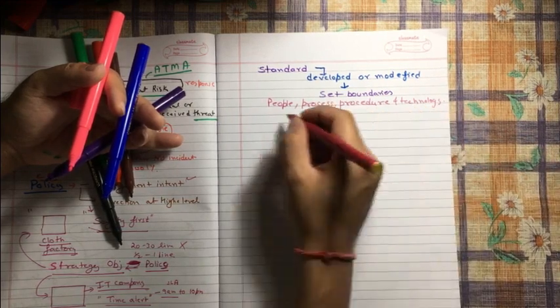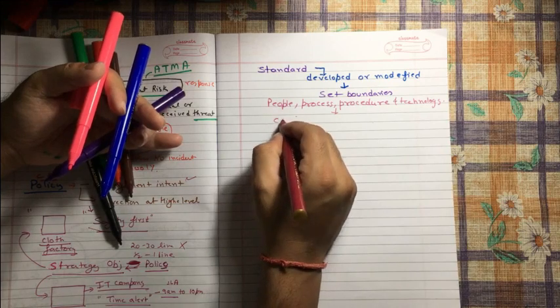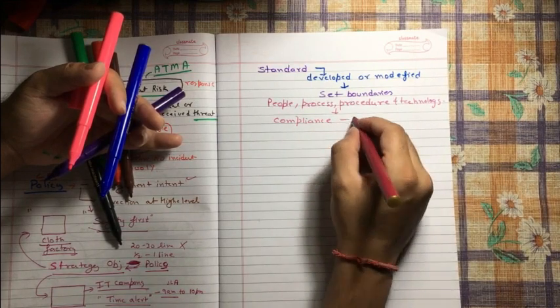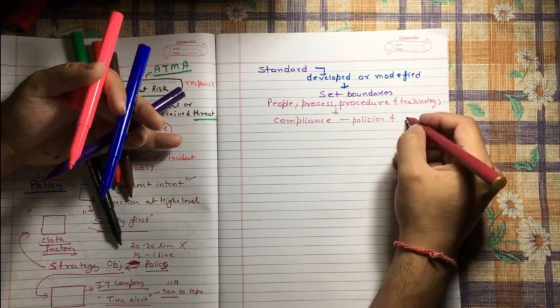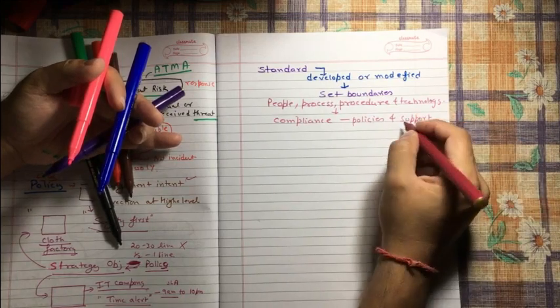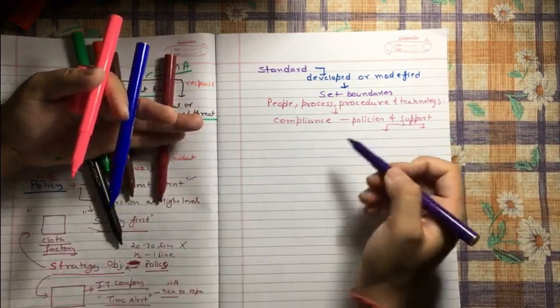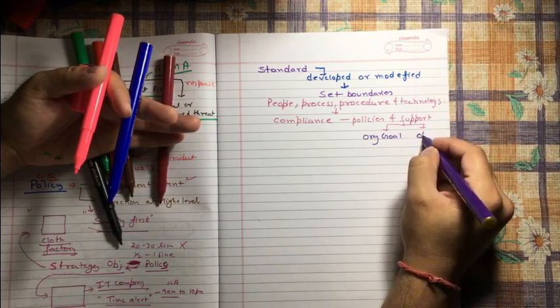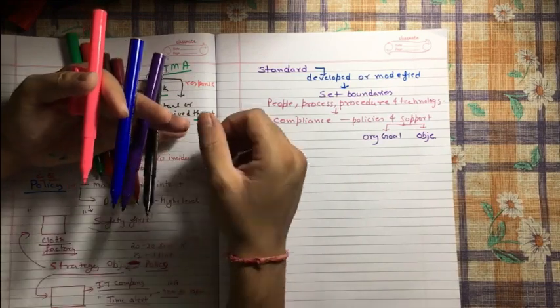What do you mean by this? And why we are doing this? So that we will maintain compliance to ensure we are complied. Compliance with policy. Policies and support. And of course, support what? Everything what we are doing, it required to support just two things: organization's goal and objective. There is the whole crux of whatever we are doing in terms of information security governance.